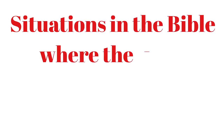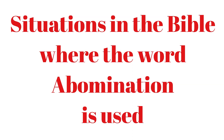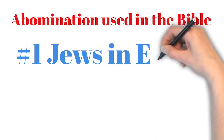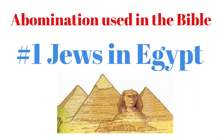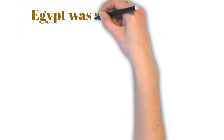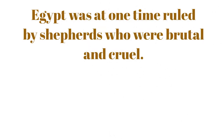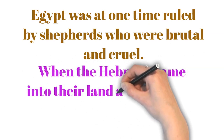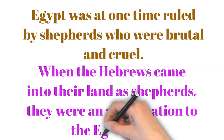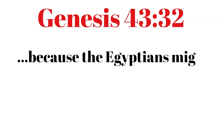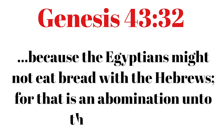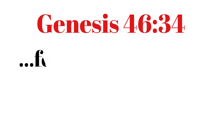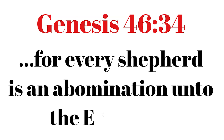Situations in the Bible where the word abomination is used. Number 1: Jews in Egypt. Egypt was at one time ruled by shepherds who were brutal and cruel. When the Hebrews came into their land as shepherds, they were an abomination to the Egyptians. Genesis 43:32 — Because the Egyptians might not eat bread with the Hebrews, for that is an abomination unto the Egyptians. Genesis 46:34 — For every shepherd is an abomination unto the Egyptians.